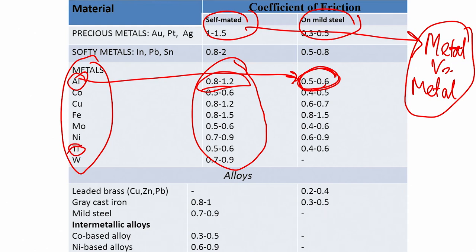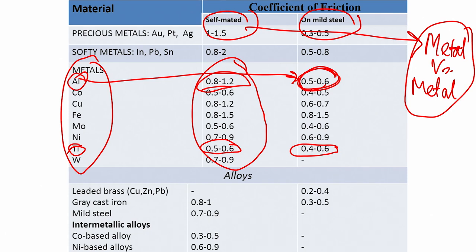Taking titanium as an example — important because aluminum and titanium alloys are widely used in aerospace and defense — titanium self-mated is 0.5 to 0.6, whereas on mild steel it can go down to 0.4. Overall, comparing the two tables, metals typically have higher coefficients of friction than polymers. Polymers can go down to 0.1 or less, while metals are largely above 0.5.